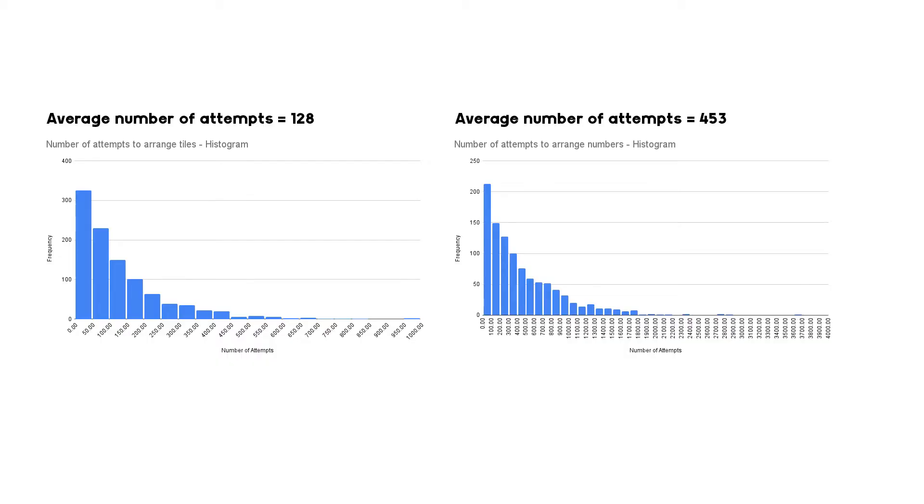It takes many many attempts to create a successful board. In fact I ran the code over a thousand times and it took an average of 128 attempts to get the correct tile placement and a further 453 attempts to get the correct number placement. Fortunately computers are quick so it takes less than a second to perform all of these attempts.